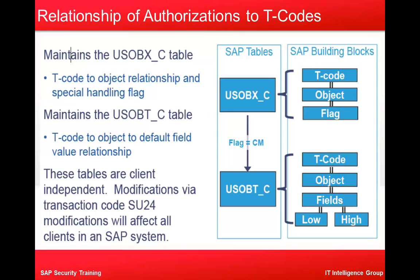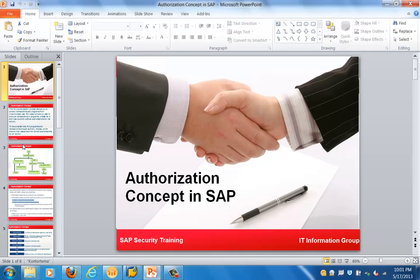The relationship of authorization to T-code — T-code to object relationship and special handling flag — are in table USoBX_C. The 'C' indicates a customer table. Both USoBX_C and USoBT_C are client-dependent tables, and modifications via transaction SU24 are done to reflect them in the SAP system. USoBX_C contains the T-code, object, and flag, and USoBT_C contains the T-code, object, and field values.